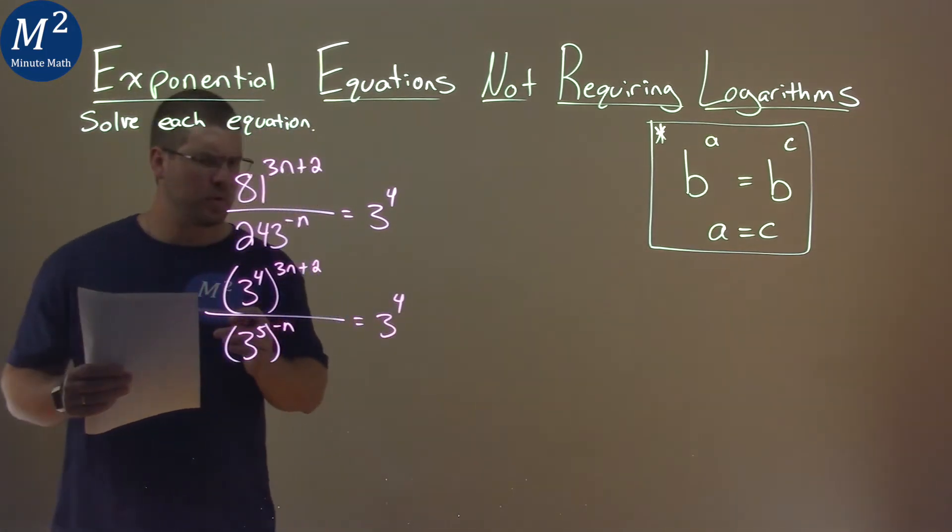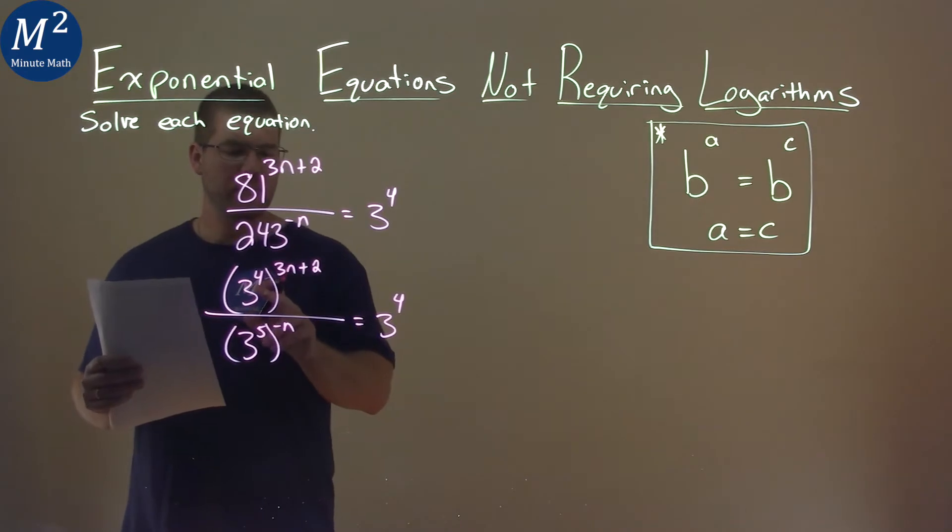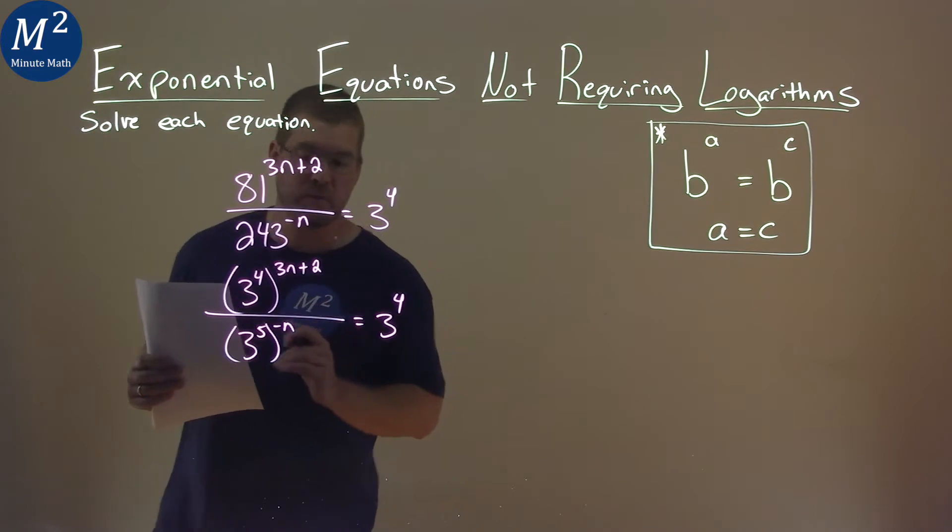Alright, our rules of exponents now state when we have something, a 3 to an exponent here, raised to another exponent, we multiply the exponents there.